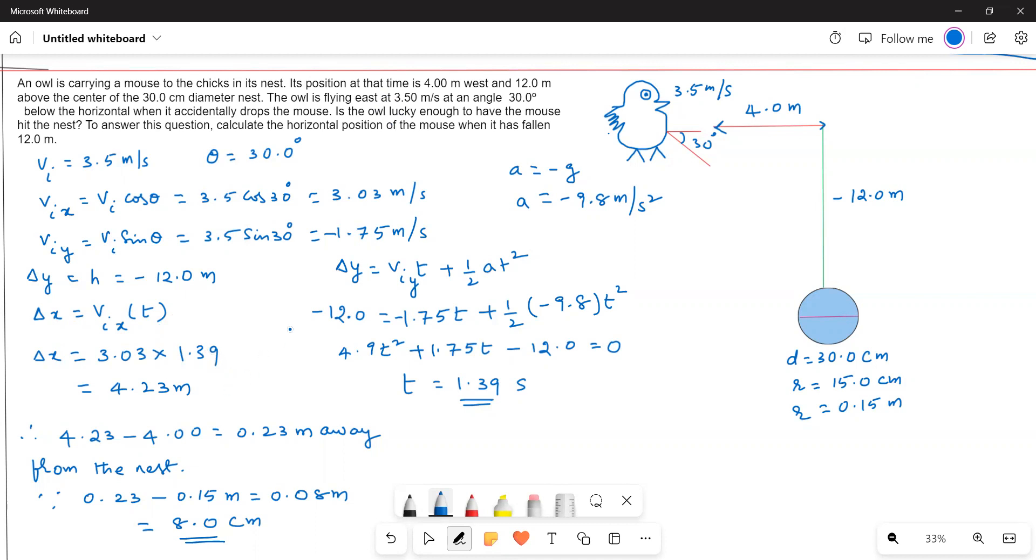To calculate the time, we have the kinematic equation Δy = viyt + ½at². We know a = -g which is -9.8 meters per second squared.